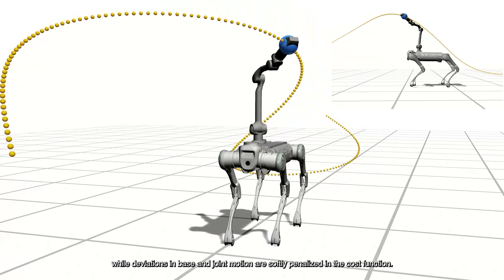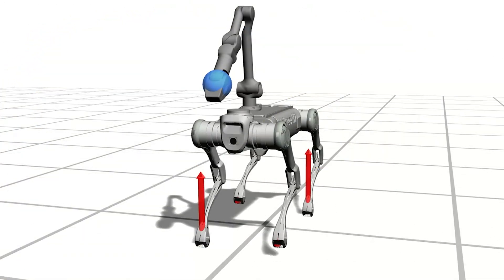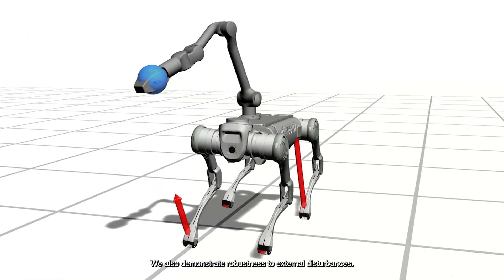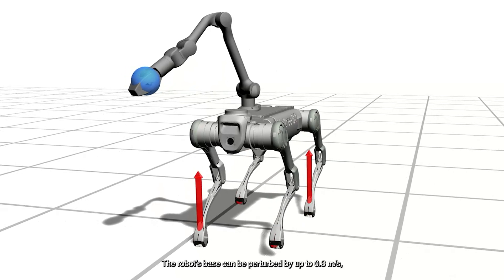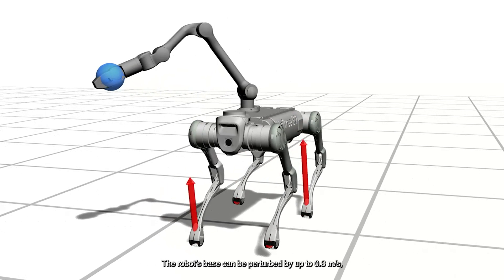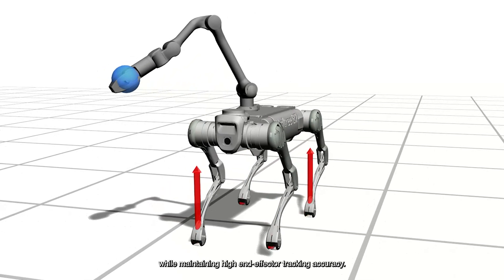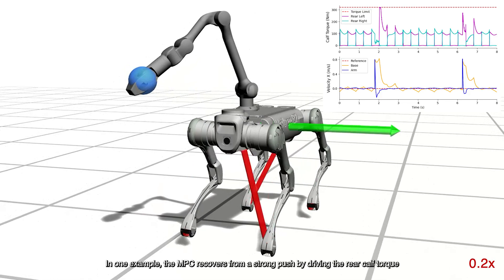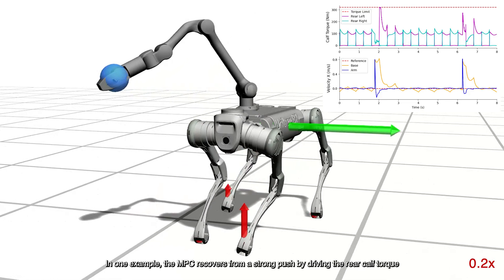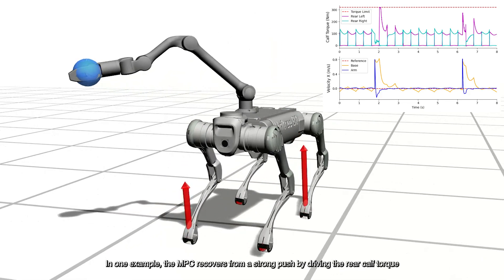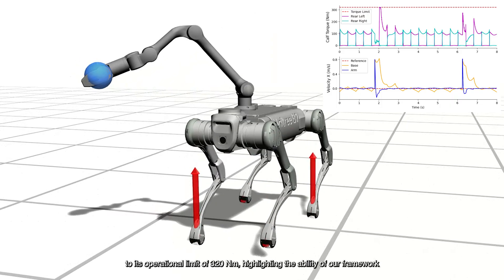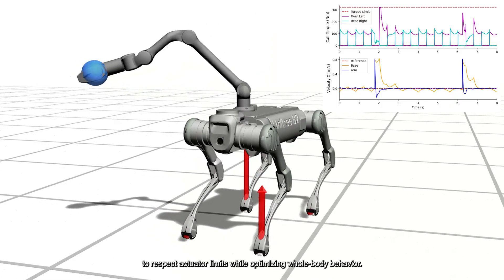We also demonstrate robustness to external disturbances. The robot's base can be perturbed by up to 0.8 meters per second while maintaining high end-effector tracking accuracy. In one example, the MPC recovers from a strong push by driving the rear calf torque to its operational limit of 320 newton-meters, highlighting the ability of our framework to respect actuator limits while optimizing whole-body behavior.